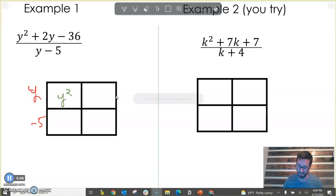So if I do y squared divided by y, that gives me y. And then y times negative 5 is negative 5y. We know that those two terms will combine to make 2y. So if they combine to make a positive 2y, then this must be a 7y right here. And so if that's a 7y, 7y divided by y gives you 7. And 7 times negative 5 is negative 35.